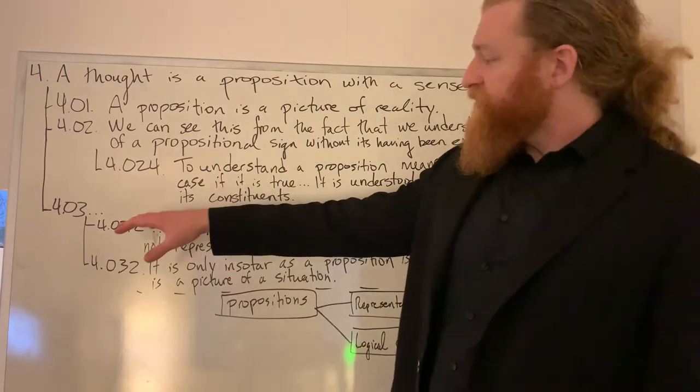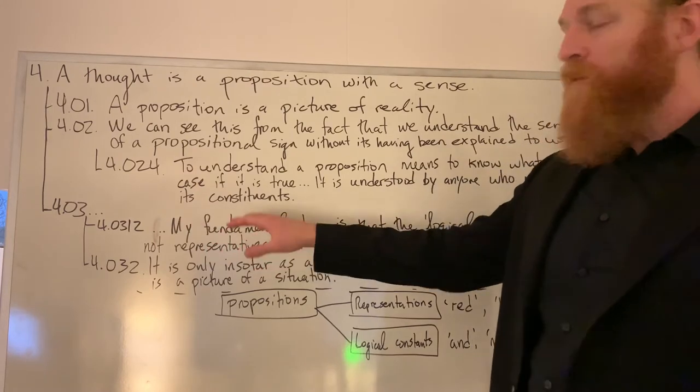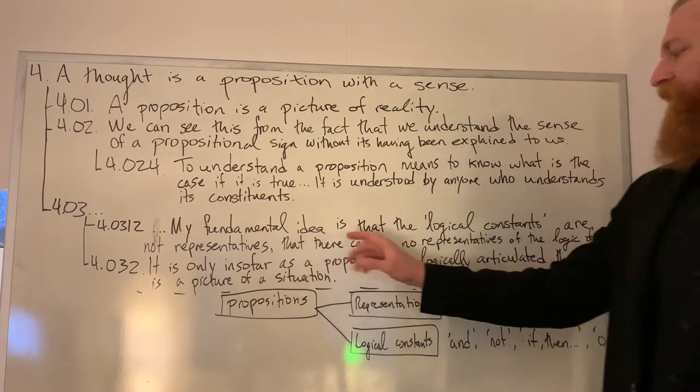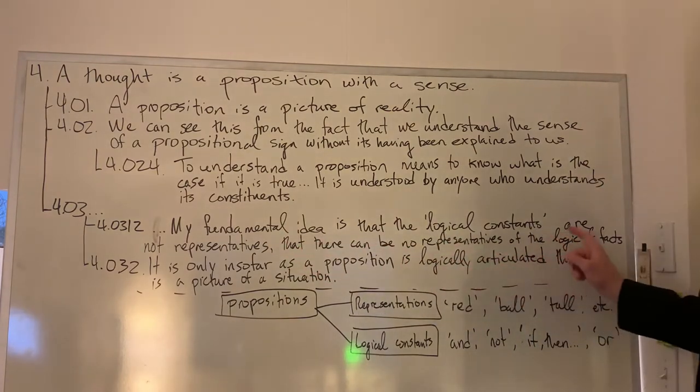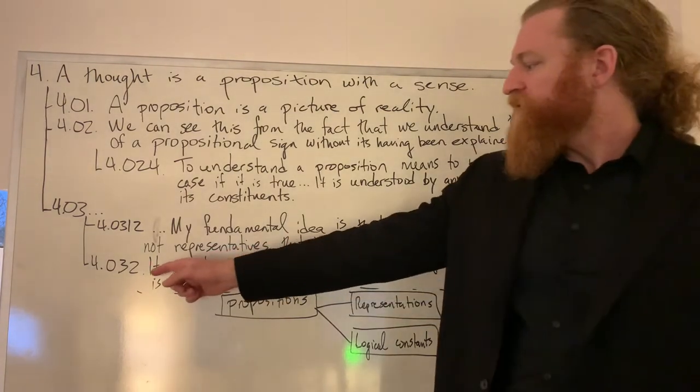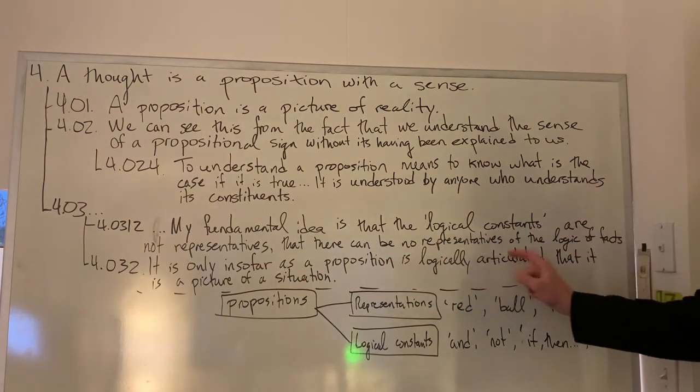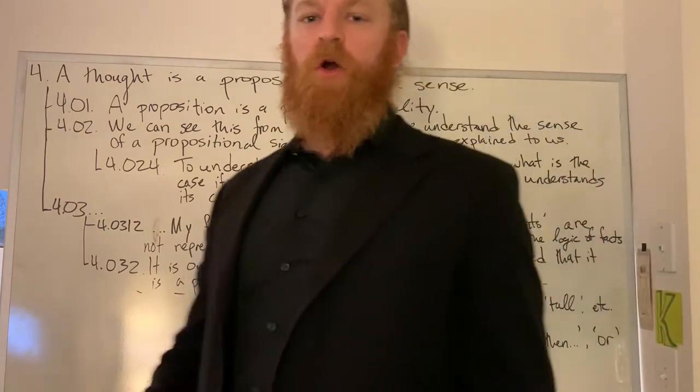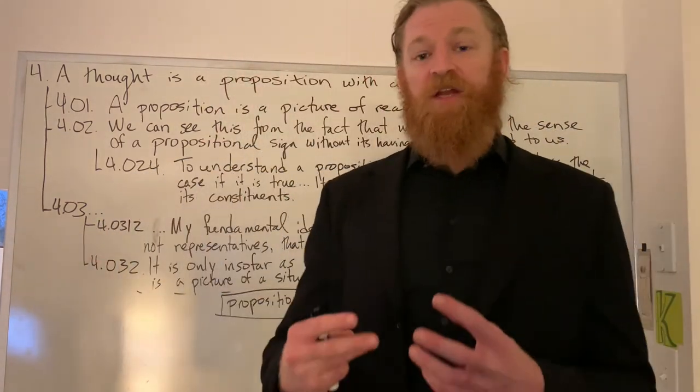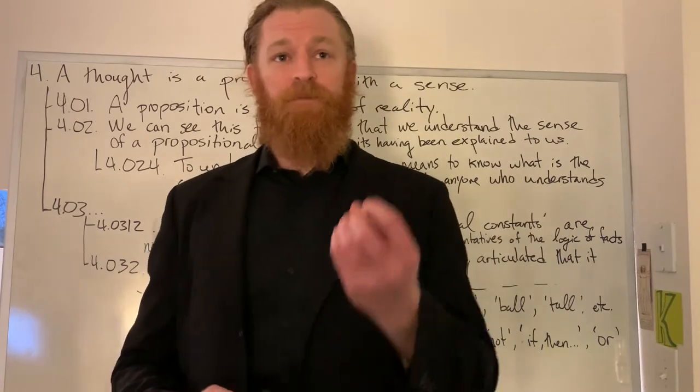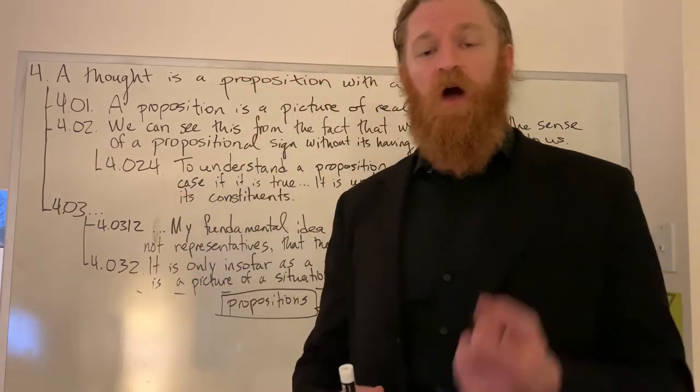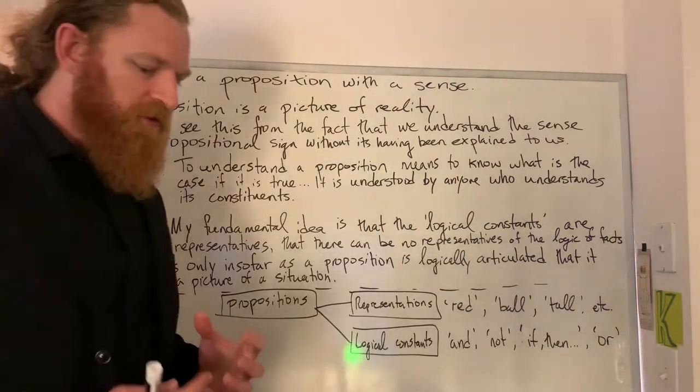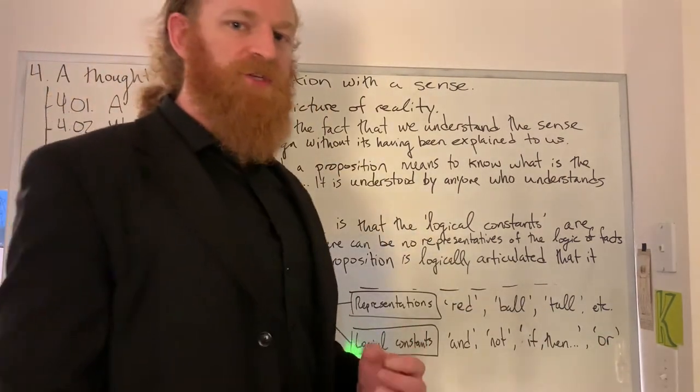As Wittgenstein moves on to say in 4.0312, my fundamental idea is that the logical constants are not representatives, that there can be no representatives of the logical facts. It is only insofar as a proposition is logically articulated that it is a picture of a situation. So in addition to compositionality, Wittgenstein is also claiming that there's something important about the nature of logical constants. These are words like and, not, if, then, or.